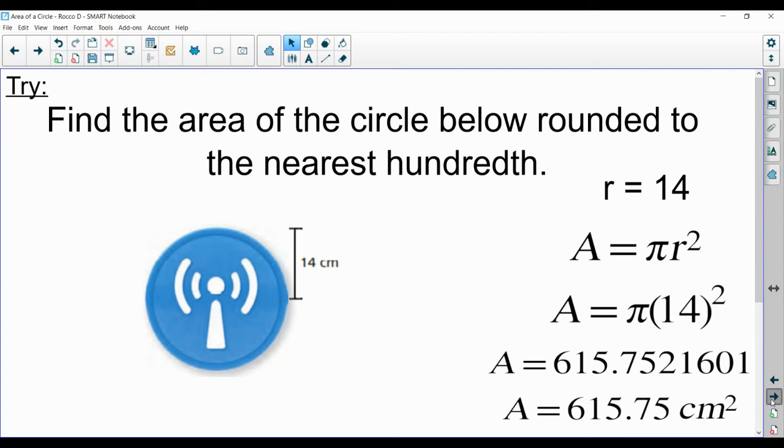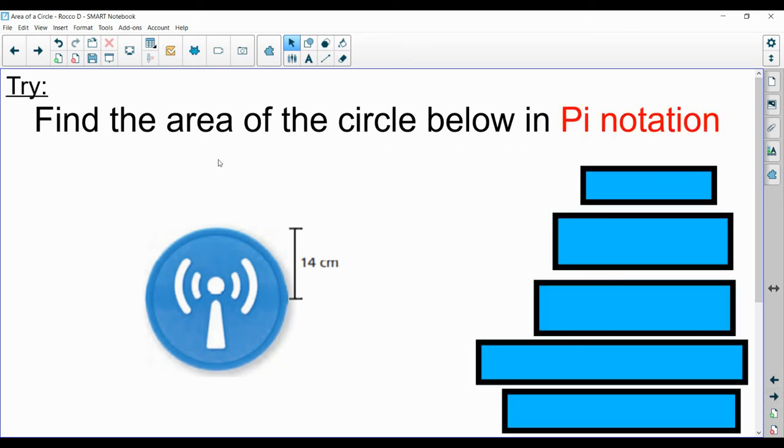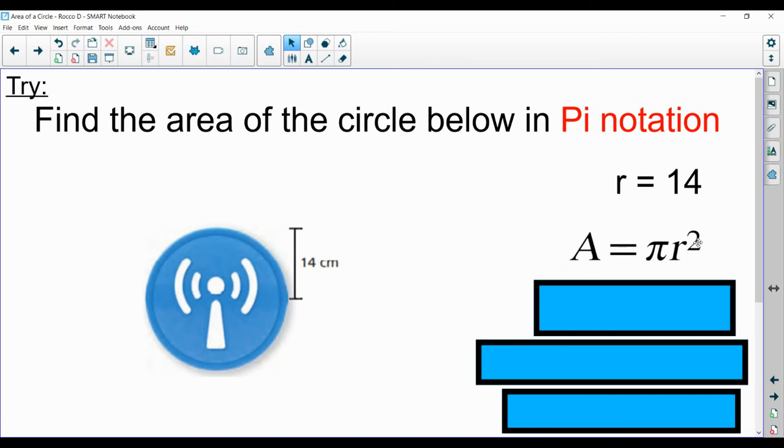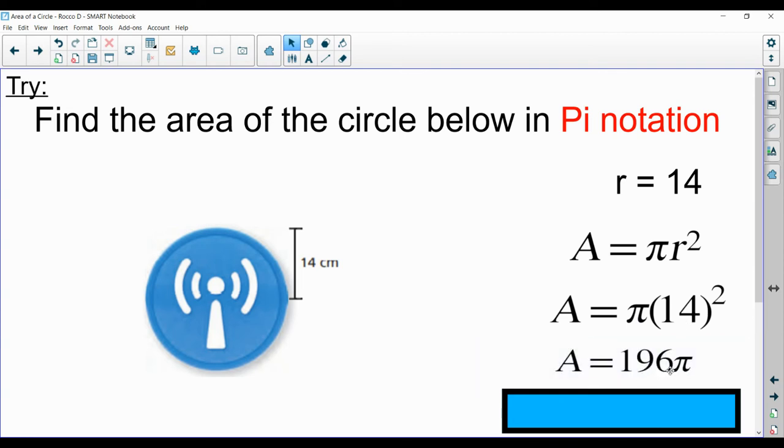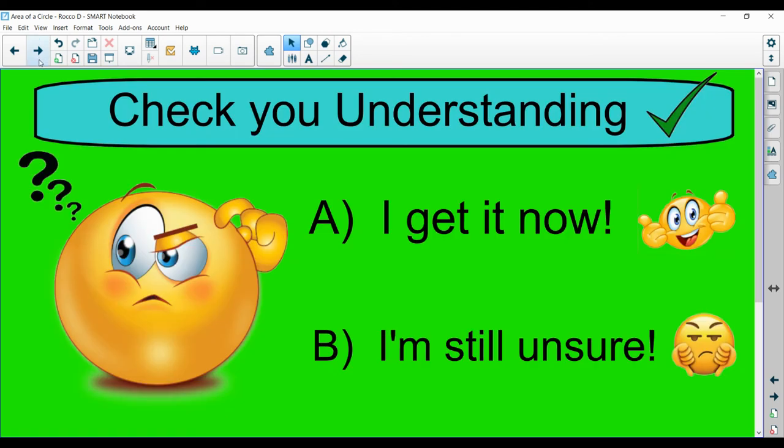I hope you got that right, Rocco. And here's the question again, but it says, find the area of the circle below in pi notation. Well, we already remember pi notation means you don't have to multiply by the calculator with the pi. You can just leave it, leave pi right there. We got our radius, which is 14. We remember our formula, pi r squared. We're going to replace the r, which is a radius, with 14. And now, all we're going to do is just square the 14. We don't have to multiply it by pi. 14 times 14 is 196. And we leave the pi right next to it, which will give us 196 pi or 196 pi square centimeters. Nice job, Rocco, if you got that. I hope you're understanding it now. If not, re-watch the video.